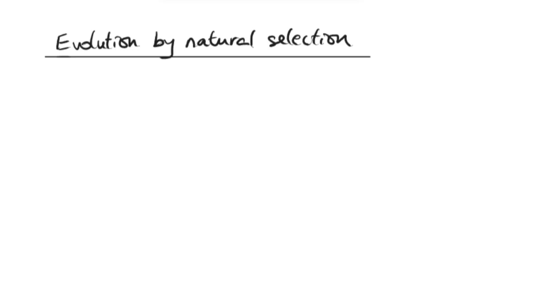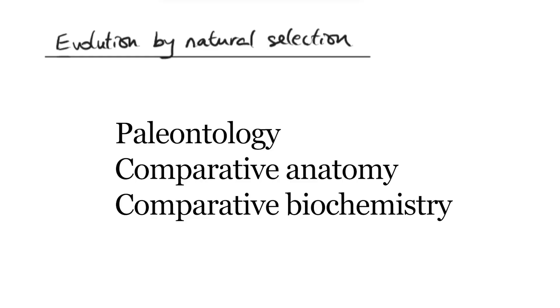In this video we'll be looking at evolution by natural selection. This theory was proposed by Charles Darwin, as many of you may already know. He was the first to propose this and it is quite widely accepted because of different evidence we've got, like paleontology, the study of fossils, comparative biochemistry and comparative anatomy.